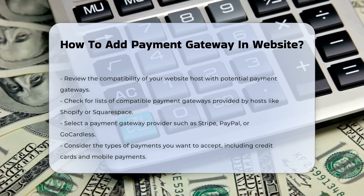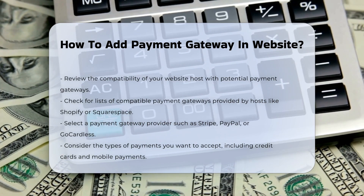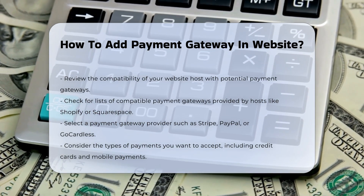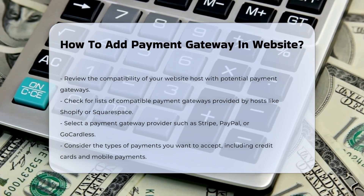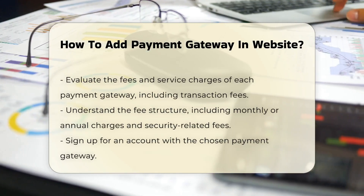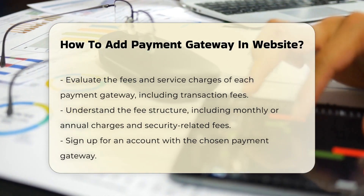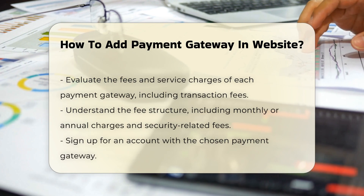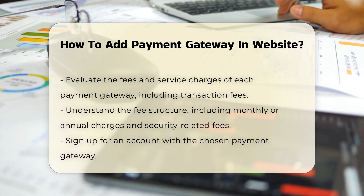Step 2: Select your payment gateway. Choose a payment gateway provider such as Stripe, PayPal, or GoCardless. Consider the types of payments you want to accept, such as credit cards, debit cards, bank transfers, or mobile payments. Each provider has different fees and security features that need to be evaluated.